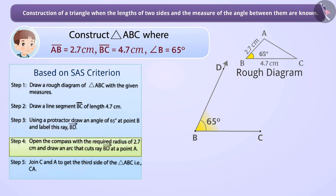Step 4. The length of AB has been given as 2.7 cm. Thus, point B is at a distance of 2.7 cm from point A.